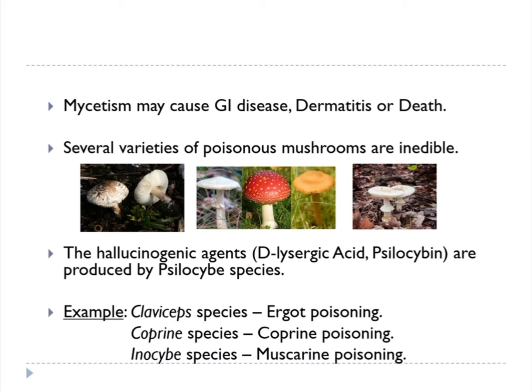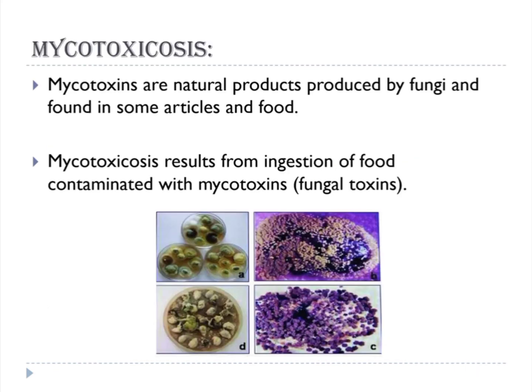For example, Claviceps species causes ergot poisoning, Coprinus species causes coprin poisoning, and Inocybe species causes muscarine poisoning.